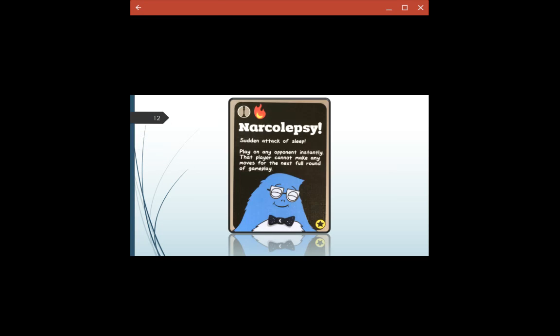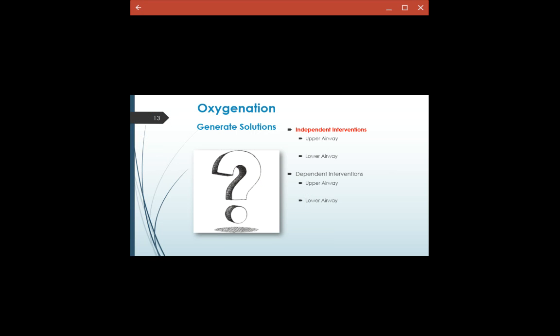So generating solutions: independent nursing interventions for our upper airway is going to be oral suctioning. For our lower airway that's going to be our incentive spirometer and cough and deep breathing. Remember we're trying to prevent atelectasis with that.